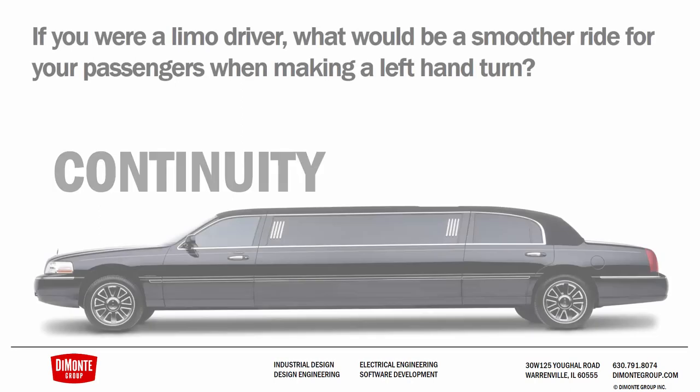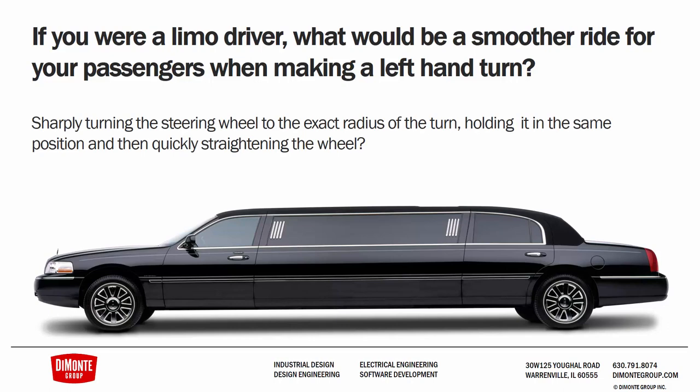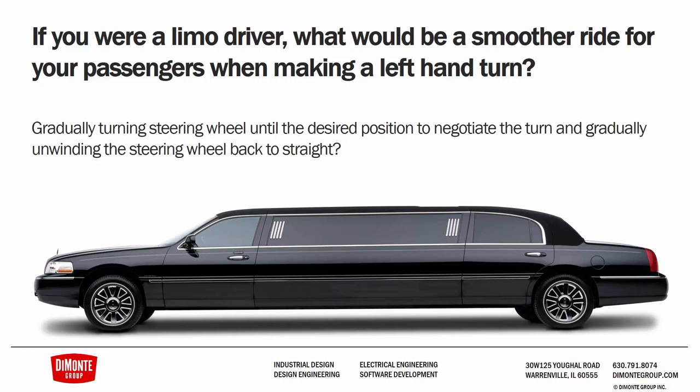I'd like to start with a real-world example. If you were a limo driver, what would be a smoother ride for your passengers when making a left-hand turn? Sharply turning the steering wheel to the exact radius of the turn, holding it in the same position, and then quickly straightening the wheel. Or alternatively, gradually turning the steering wheel until the desired position to negotiate the turn, and gradually unwinding the steering wheel back to straight.